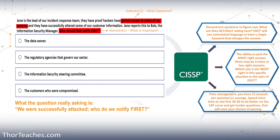Then we look at the answer options: the data owner, the regulatory agencies that govern our sector, the IT security steering committee, or the customers who are compromised. Very likely we would talk to all of those at some point. The question is first. Would we notify the data owner? Probably. The agency that governs our sector? No — we have to notify them, but they're definitely not first. The IT security steering committee? No, the data owner needs to know first. The customers? Maybe — it depends on the laws, the regulations, how bad the breach was. This is not a hard question, but it works well for showing how to deconstruct questions.